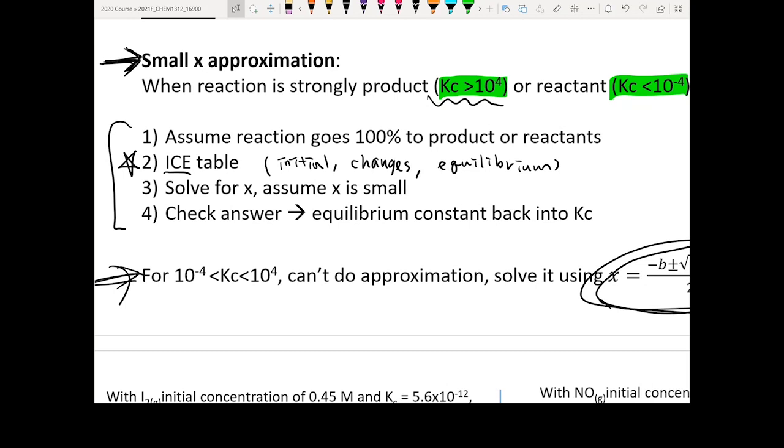So once you do this and then you can actually apply your small x approximation to solve for the x. And once you solve the concentration of each species, then you can actually go back and check out whether the equilibrium constant you calculate actually agrees with the equilibrium constant given in the question. If it does, then you are all set. You know you have done things properly.